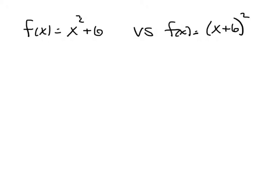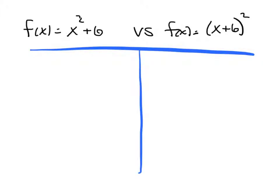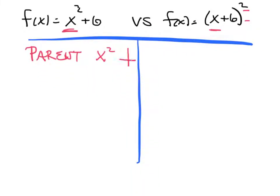Now we'll focus on translating these functions. For every function, you should be able to translate it — shift it up, down, left, or right — without a calculator. Any term that is added outside of parentheses, a radical, or a quantity is a vertical shift. Anything that's added or subtracted inside parentheses or a radical is your horizontal shift. The horizontal shift is the one that we're going to do the opposite on.